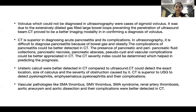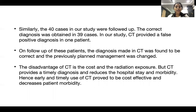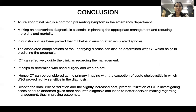Ureteric calculi are better detected on CT, which can identify the exact location, size, and severity of obstruction. Vascular pathologies like SMA thrombus and SMV thrombus can also be better detected on CT. In our study, 40 cases were followed up and a correct diagnosis was obtained in 39 cases; CT provided a false diagnosis in only one patient. The disadvantage of CT is cost and radiation exposure, but CT provides timely diagnosis and reduces hospital stay and morbidity.